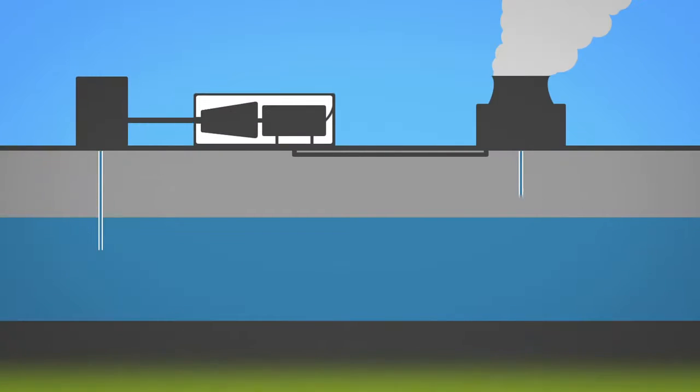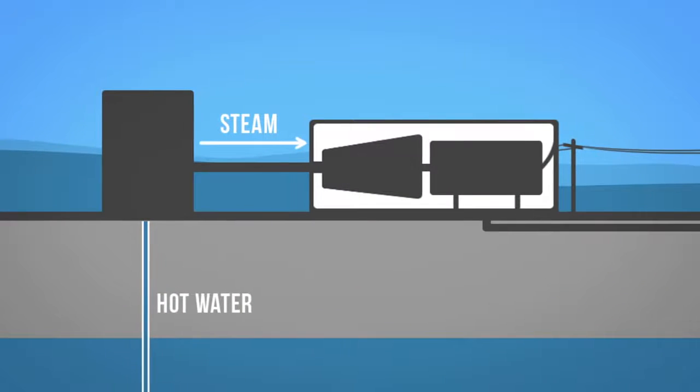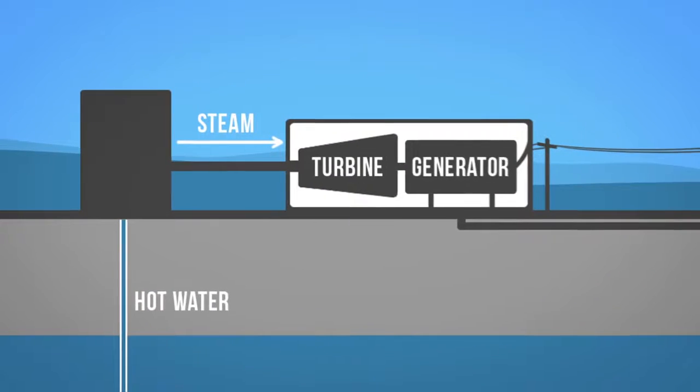Geothermal heat can also be used to produce electricity in a geothermal power plant. Electricity is generated when geothermal heat produces steam that turns turbines on a generator.